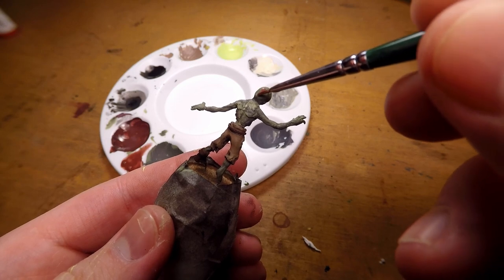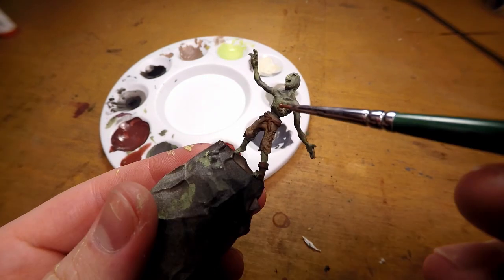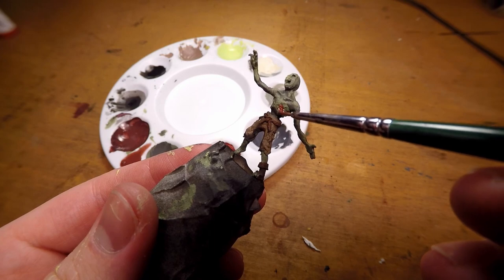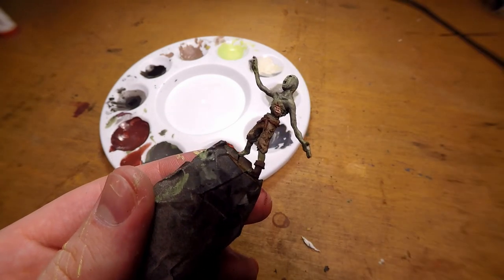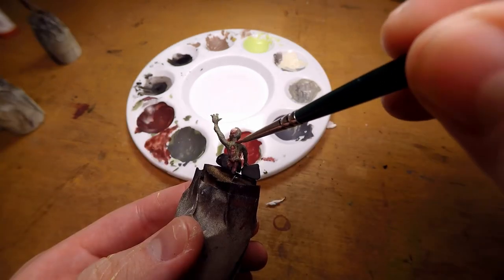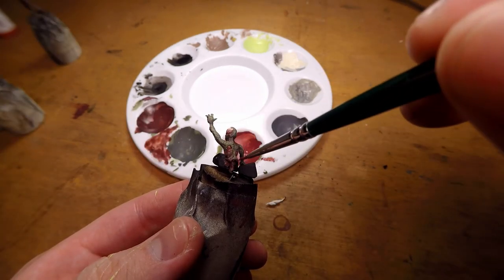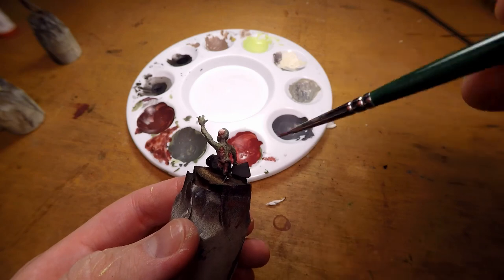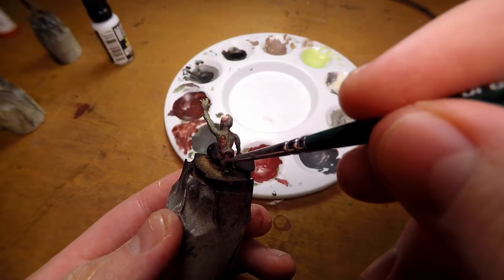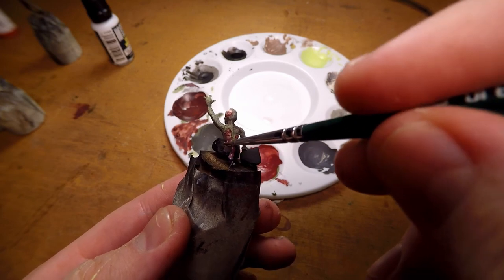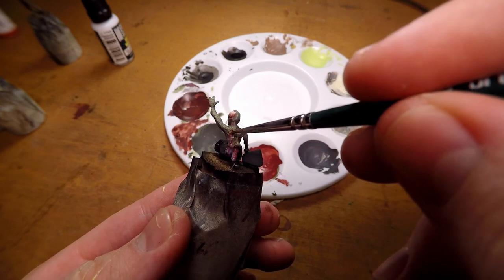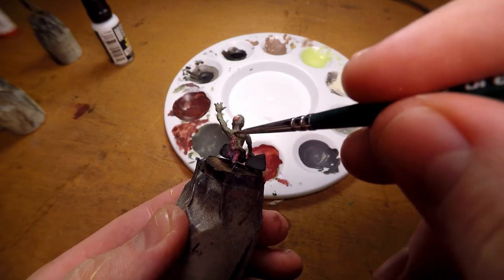Once that's done I can add the blood effect. Which is just a watered down crimson red color. That I add and dab away with a paper towel as needed. I then go in with a dry brush of a slightly lighter red to add some variance to the color. And then go in with a gloss varnish to make it nice and shiny. And that being the last step. All they need is a base. And then they are done.